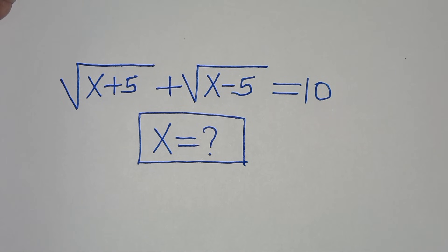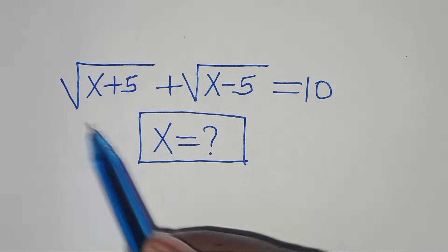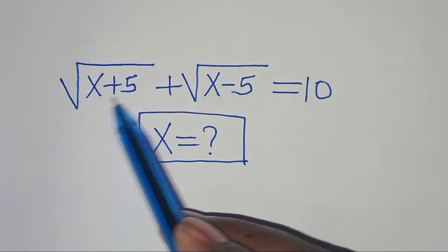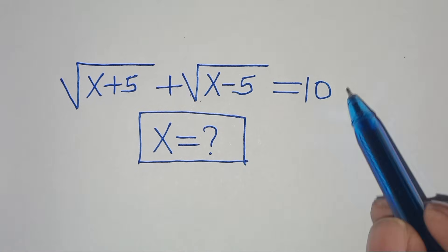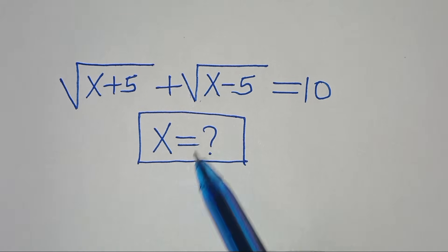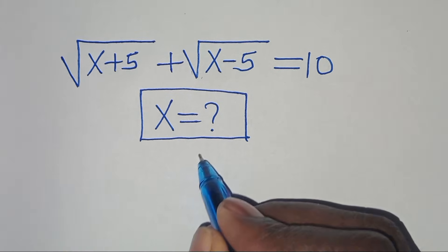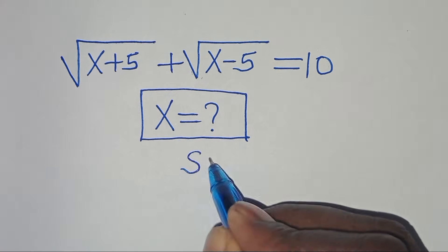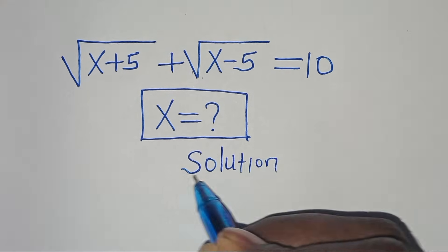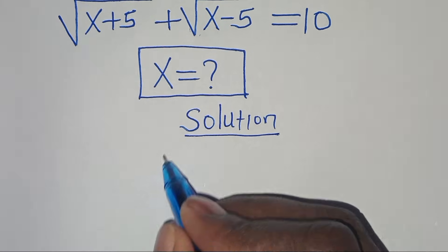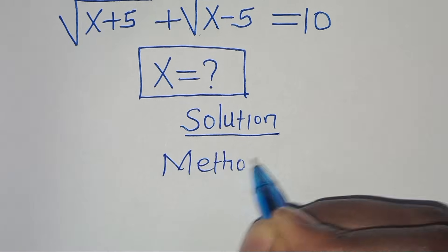Hello everyone, you're welcome to solve this nice math problem: the square root of x plus 5, plus the square root of x minus 5, is equal to 10. So what is the value of x? Let's provide a solution. To solve this problem, let's apply two methods. Let's start with Method 1.